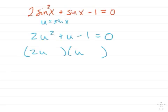2u times u, here's factoring. This is going to be plus 1, and this is going to be minus 1, because that way positive 2u minus u equals positive u.